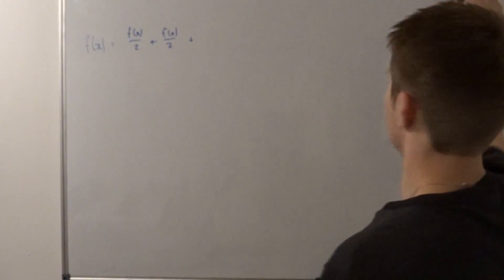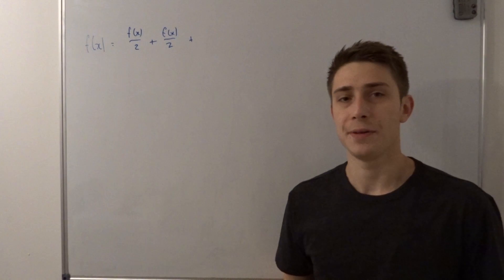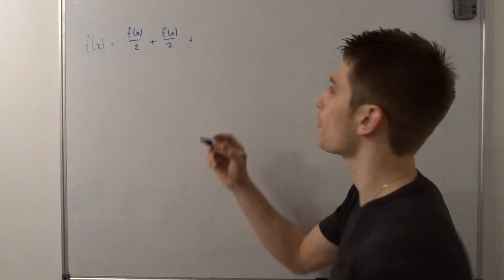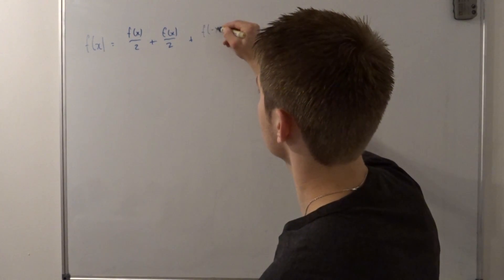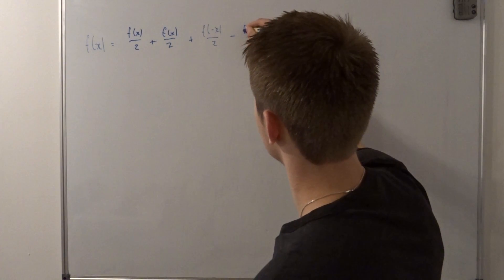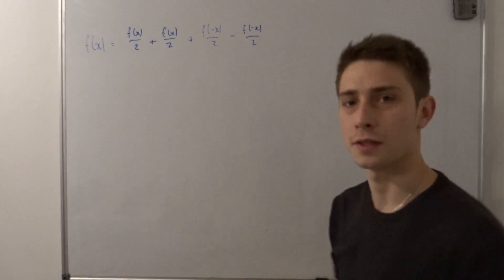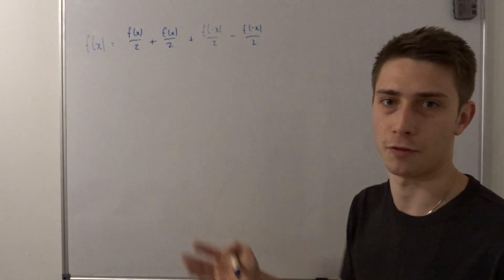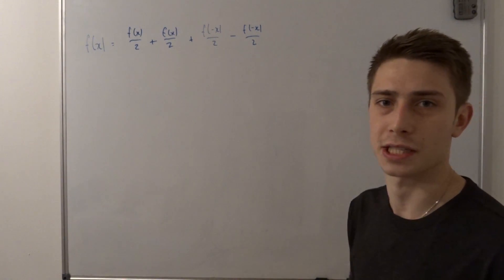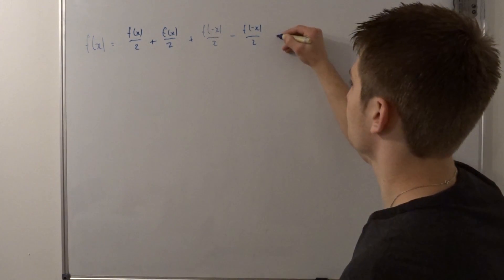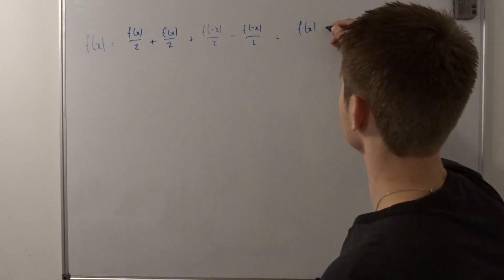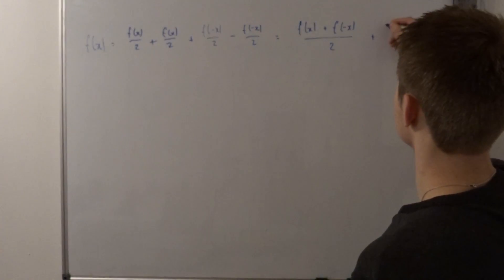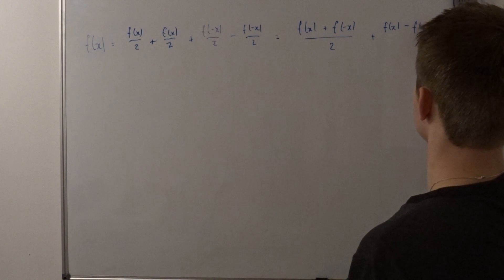We just have to think about what a zero actually is. Maybe you can add something and then subtract the whole thing again. So we could add f of minus x over 2 minus f of minus x over 2. That becomes zero, and then we can group it a little bit. That's nothing else than f of x plus f of minus x over 2 plus f of x minus f of minus x over 2.